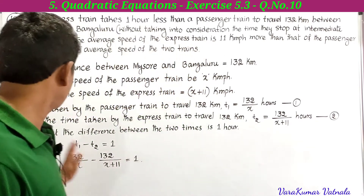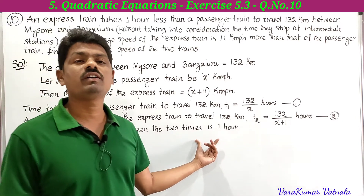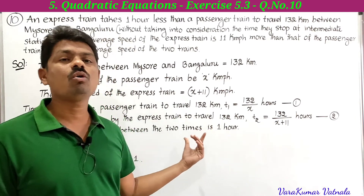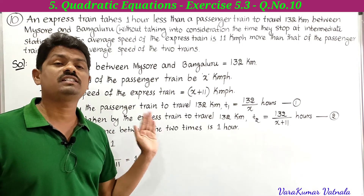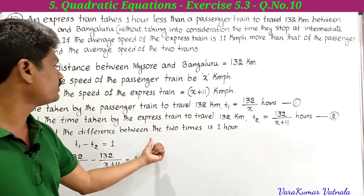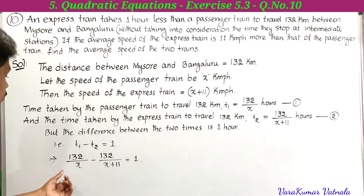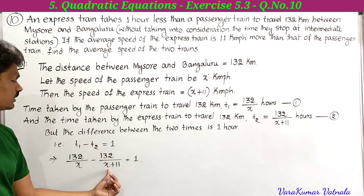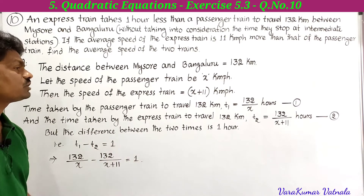The difference between the two times is one hour, since the express train takes one hour less than the passenger train. So t1 minus t2 equals 1, which gives us: 132 by x minus 132 by (x plus 11) equals 1.